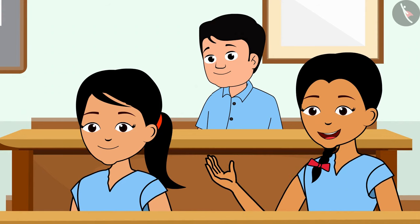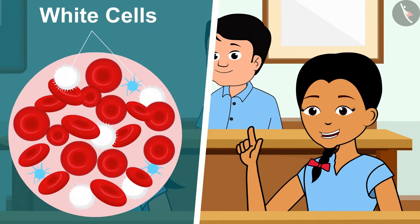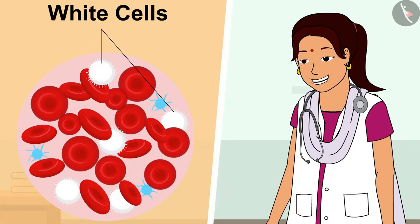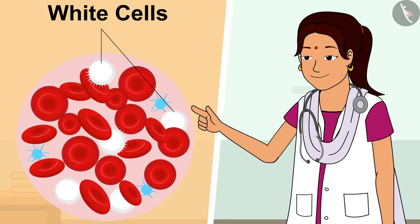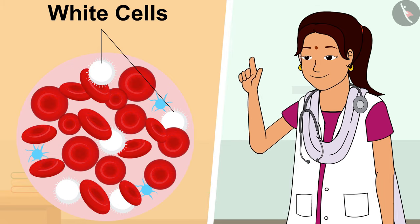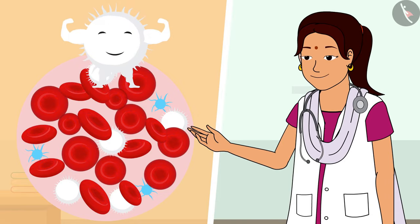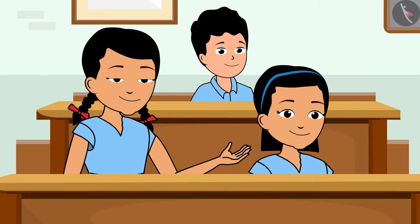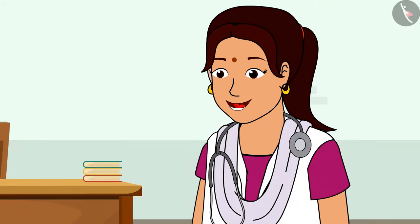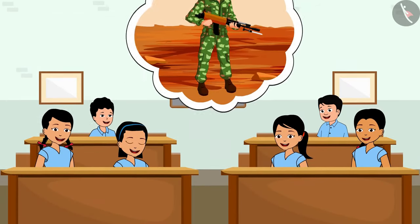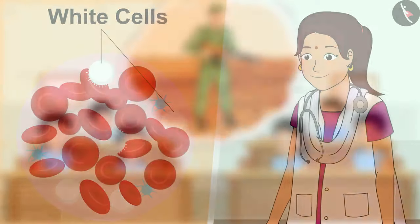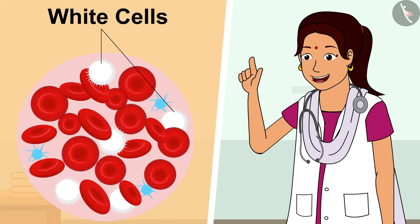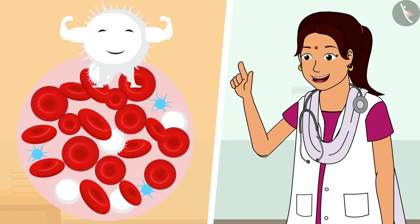My sister had told me that along with red blood cells, there are white blood cells also present in the blood. Yes, children — the blood also consists of white blood cells, or WBCs. They are also known as the soldiers of our body. The soldiers of our body? Why is that? What do soldiers do? They protect our country! Yes, similarly, the white blood cells — the WBCs — help our body fight with various diseases.